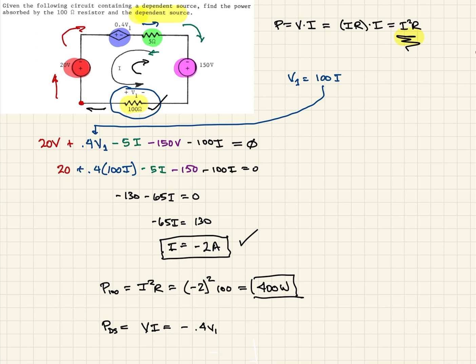Then I times I, but we remember that we solved for V1. V1 was 100 I, so that's going to be 0.4 times 100 times negative 2. That's our V1, our 0.4 V1. And that's going to be times our current, another negative 2.